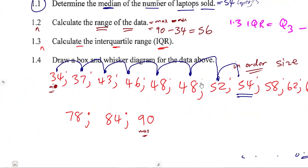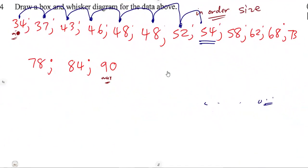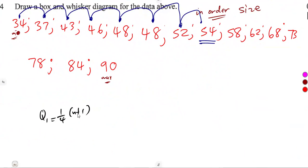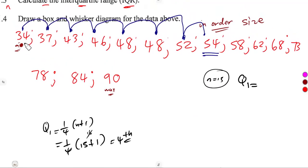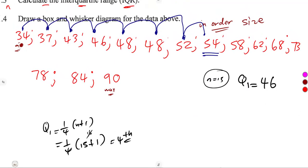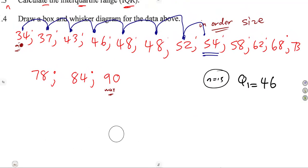To find Q1, use its position formula: a quarter of (n + 1). With n = 15, that is a quarter of 16, which equals 4. So Q1 is the 4th value. Counting: 1, 2, 3, 4 — the 4th value is 46. So Q1 equals 46.